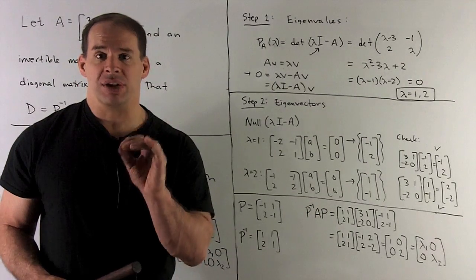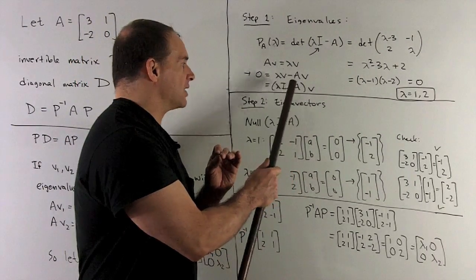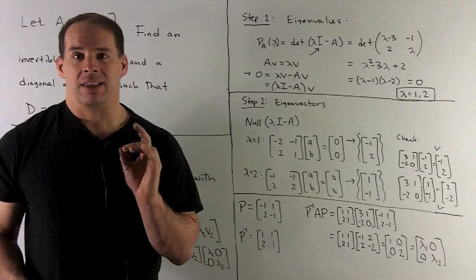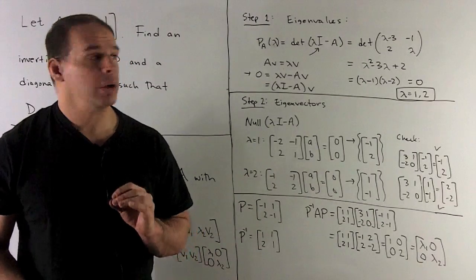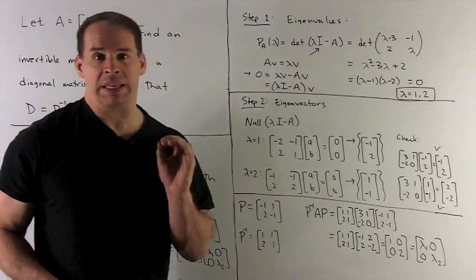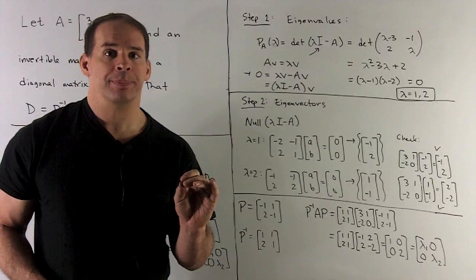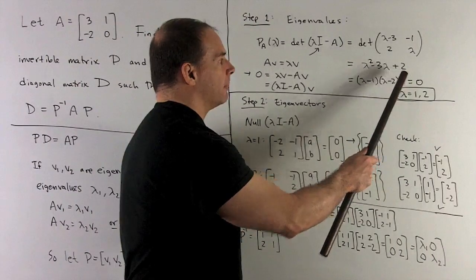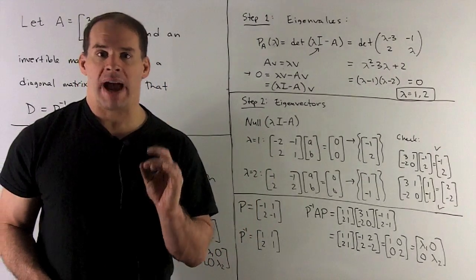I'm going to find where this gives me zero when V is non-zero. So, I want non-zero solutions to lambda I minus A times V equals zero. That can only happen if lambda I minus A has determinant equal to zero. So, you'll note what our characteristic polynomial is doing is figuring out what lambda forces the determinant to be equal to zero. Now, in our special case, we put our A in. We have this matrix here. Get our polynomial by taking the determinant. We factor, set it equal to zero, and I get lambda equal to one and two for my eigenvalues.